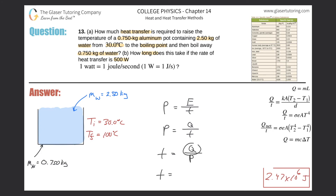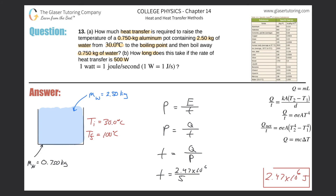Dividing 2.47 times 10 to the sixth by 500 gives 4.94 times 10 to the third seconds. Converting to minutes — divide by 60 — that's about 82 minutes, or just over an hour and 22 minutes. That actually makes sense: once water reaches boiling point it doesn't evaporate instantly, and losing a third of the water would definitely take time.